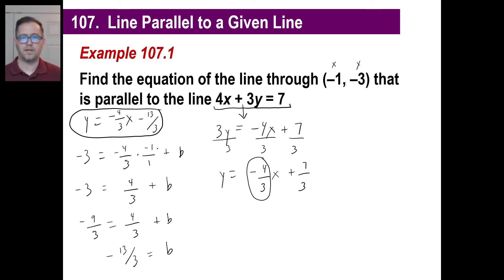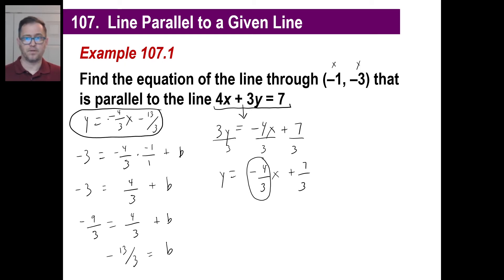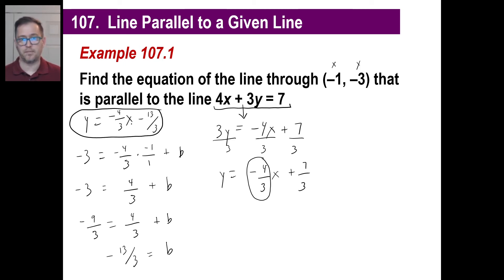You just find the slope of that line, and bang — it goes in there because it's parallel. The other thing you have to find: it passes through that point, so you plop the x and the y in there, find b, stick it back in. You're done.